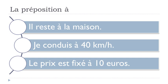The last example for 'at' is for price: 'Le prix est fixé à 10 euros'. So in that case it would be translated with 'at', and in French we use À. So: 'Il reste à la maison', 'Je conduis à 40 km/heure', 'Le prix est fixé à 10 euros'. If you want to express this 'at' concept in these situations, you will have to use this preposition À.